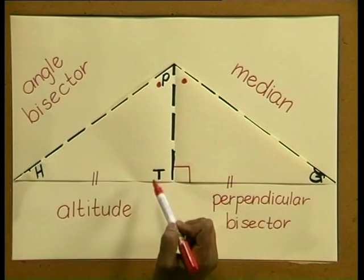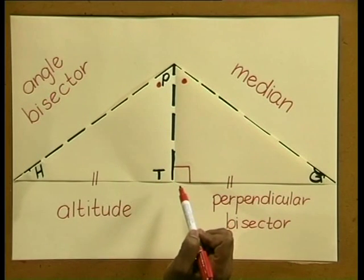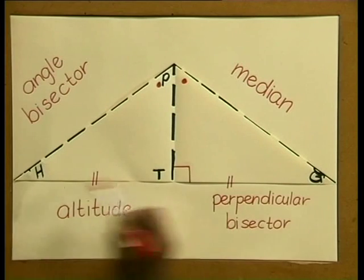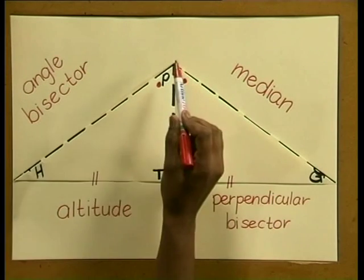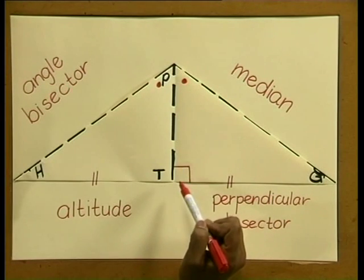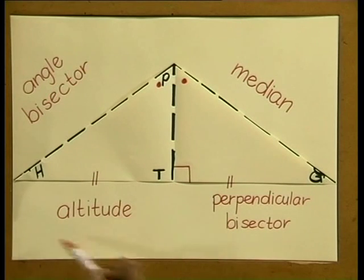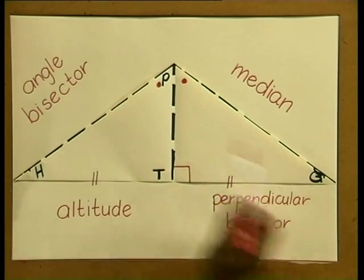Because the symmetry line PT makes a 90 degree angle with the opposite side of the triangle and also passes through the vertex, PT is also an altitude of triangle PGH. I am sure that you remembered the terminology: angle bisector, median, perpendicular bisector, and altitude from our previous lesson. Isn't it interesting that all of these lines coincide with our line of symmetry? Just remember that we can draw these lines for all the sides in the triangle.